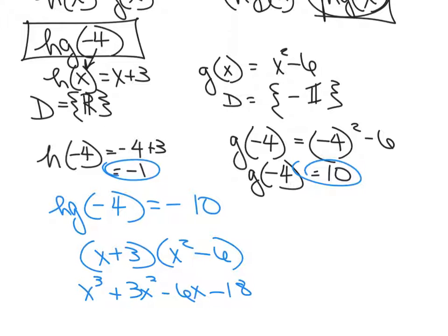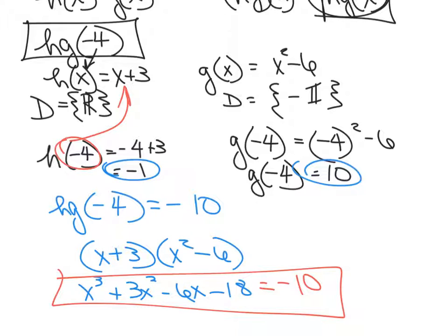And you get x cubed plus 3x squared minus 6x minus 18. And then we take our negative 4 from here and we plug it into each one of these. Negative 4 times negative 4 times negative 4 is negative 64 plus 48 plus 24 minus 18, and that also gives us negative 10. Only if you're crazy are you going to do it that way. I always like to plug the negative 4 into the original equations first, then multiply them. You're usually dealing with simpler equations and smaller numbers.